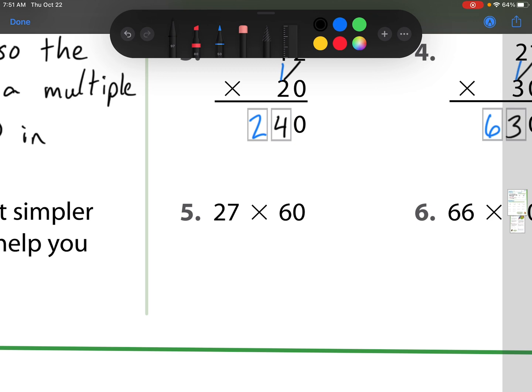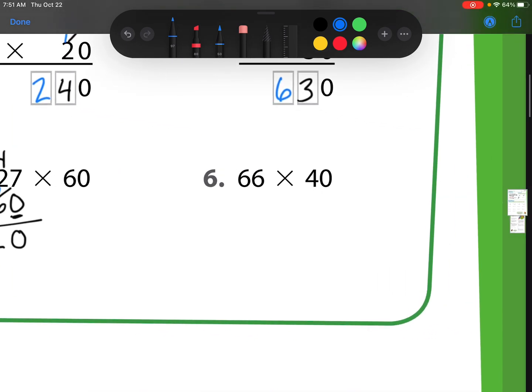Number 5 is 27 times 60. So I'm going to put that zero down because whenever I have a zero in the ones place, I'll have a zero in my answer. And I do 6 times 7 is 42. So I put the 2 down, regroup that 4. Then I have 6 times 2 is 12, plus 4 is 16. So our answer is 1,620. Our next one is 66 times 40. So again, I put that zero down, and then I do 4 times 6 is 24, and I regroup that 2. Then we have 4 times 6 is 24, plus 2 is 26. For an answer of 2,640.